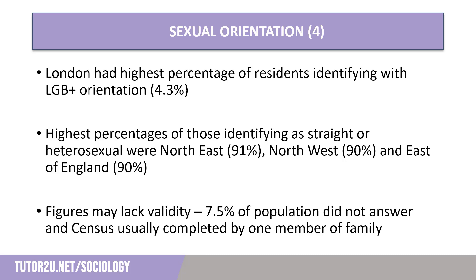However, as already highlighted, sociologists would look to examine the missing 7.5% and why this was not answered. Furthermore, with one person answering the census for the whole family, can we be certain that individuals are able to record the sexual orientation of others accurately? Sexual orientation is often closely guarded by some people, and therefore it may not be known what an individual's true sexual orientation is.